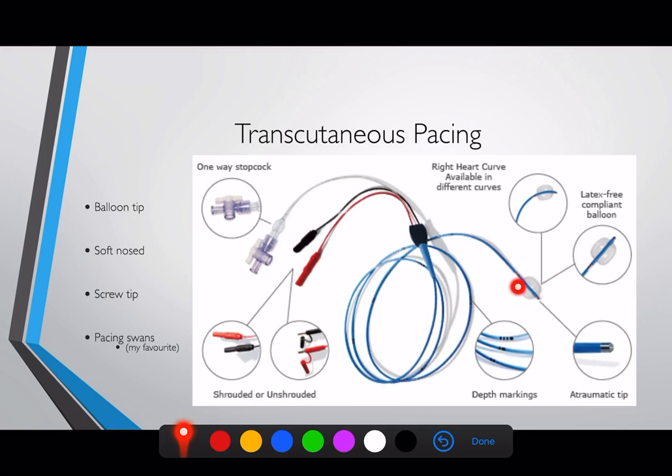This particular example has a balloon tip and an atraumatic tip. You can see how long it is, with depth markers: two lines at 10 cm, three lines at 15 cm, four lines at 20 cm, and so on. Don't inflate any balloon too high up — you might inflate it in the vein and cause rupture. Similarly, don't push too much wire in or it can coil up in the ventricle and tie itself in a knot requiring cardiac surgery. Be very careful if putting in more than 25 to 30 centimetres.